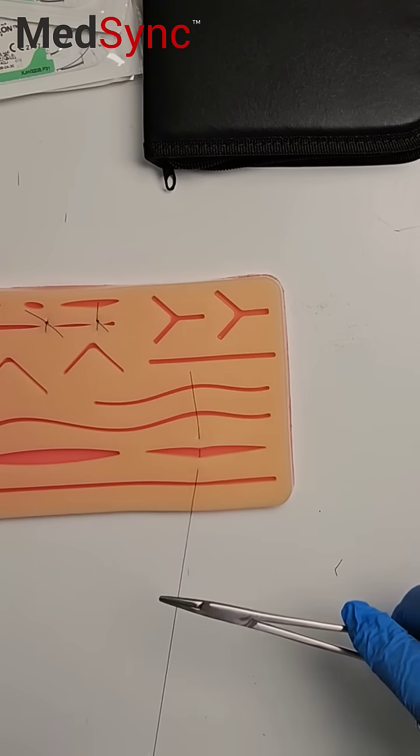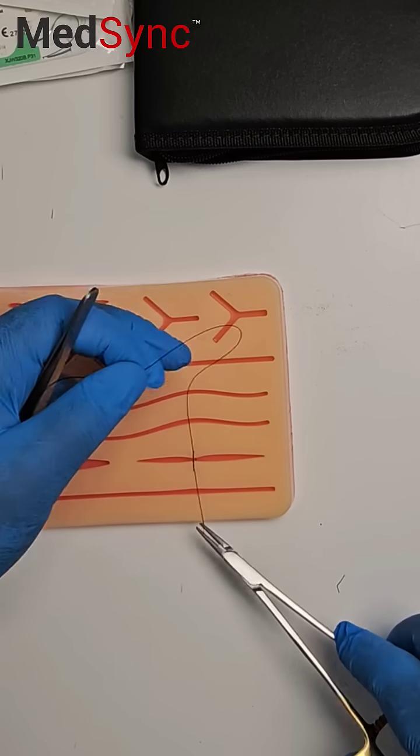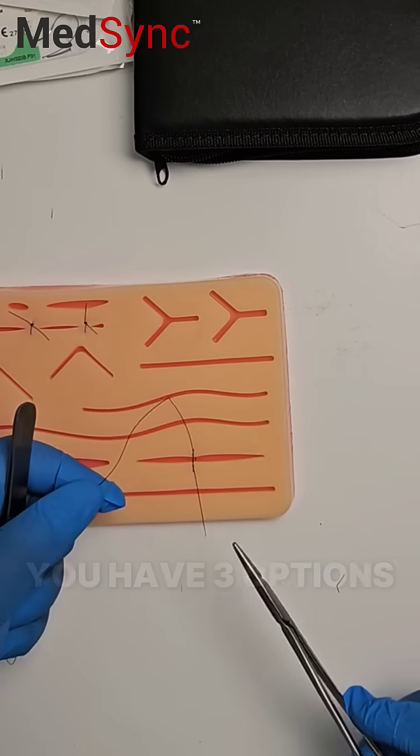So what happens is this. You tie your knot and it loosens like that. So you have three options.